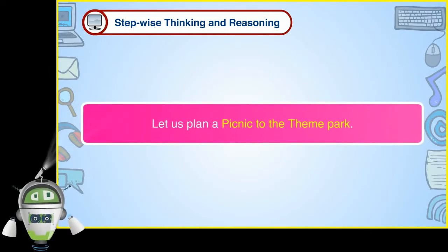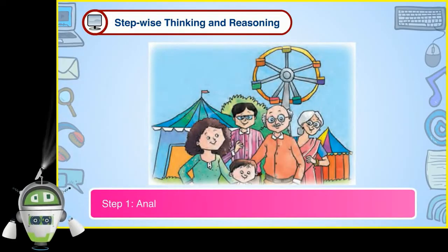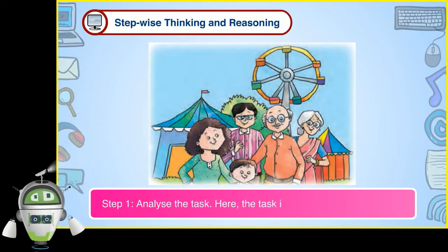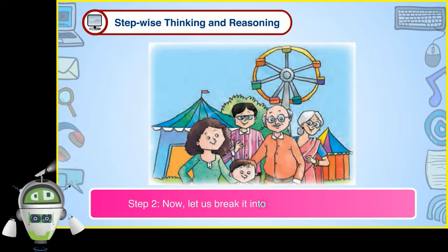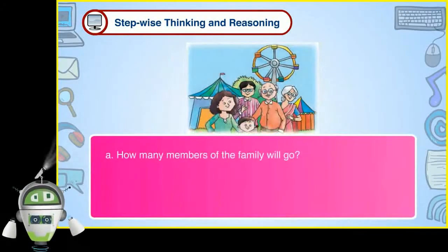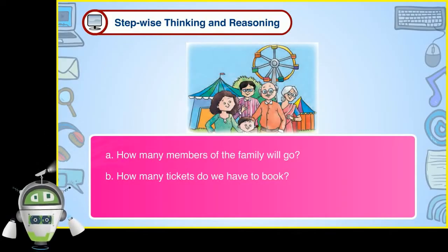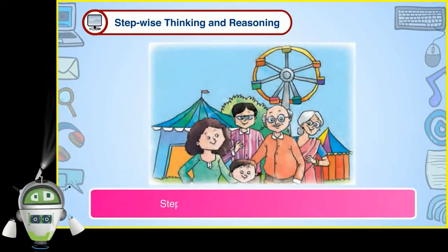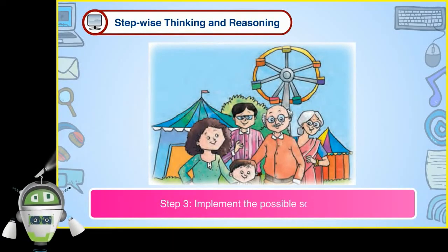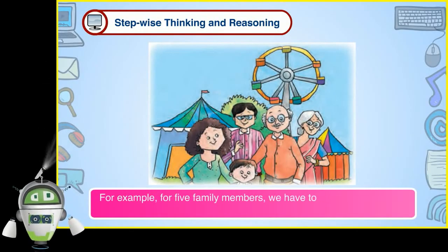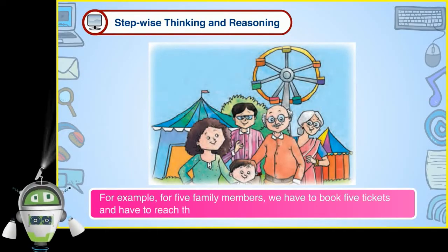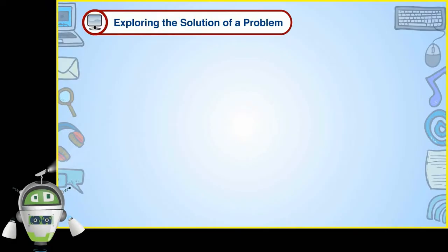Let us plan a picnic to the theme park. Step 1: Analyze the task — the task is a visit to the theme park. Step 2: Break it into simple steps — how many family members will go, how many tickets to book, and how we will travel. Step 3: Implement the possible solutions — for 5 family members, book 5 tickets and reach the theme park by car.